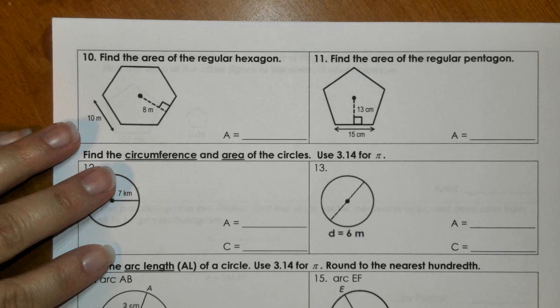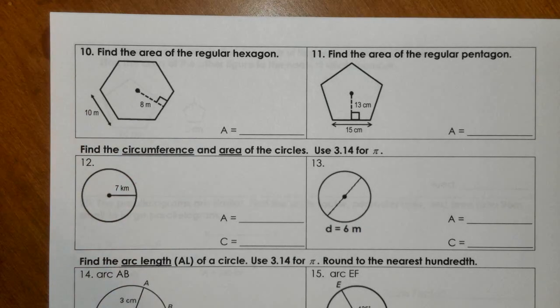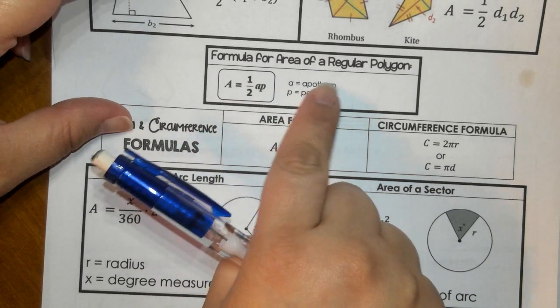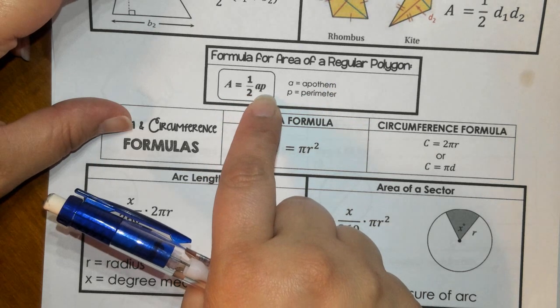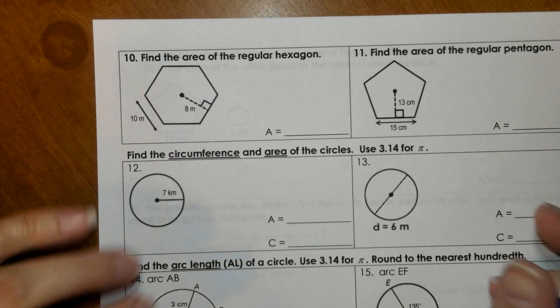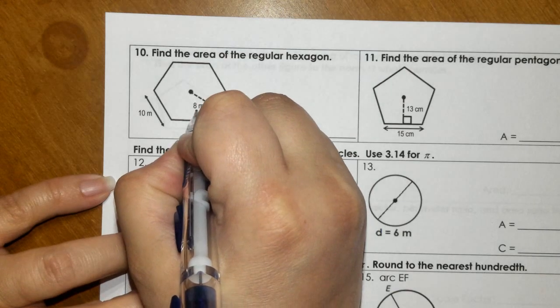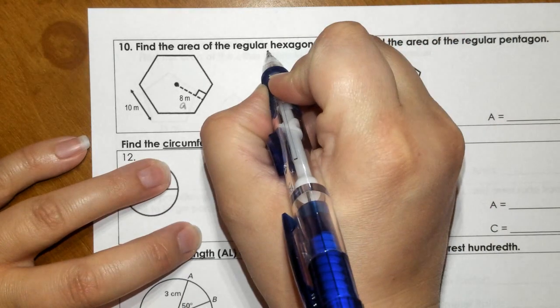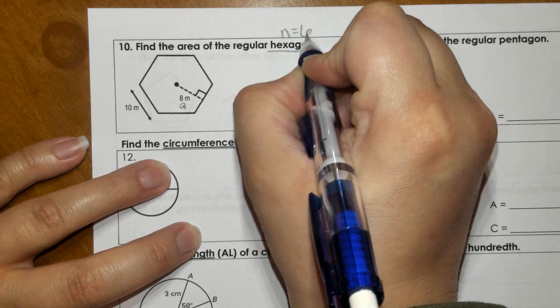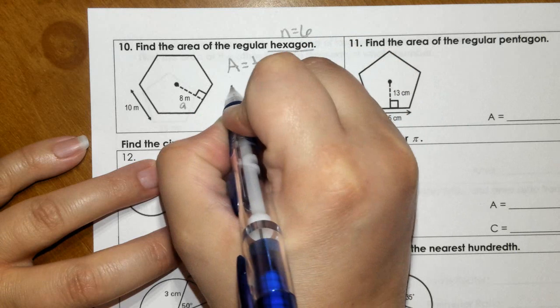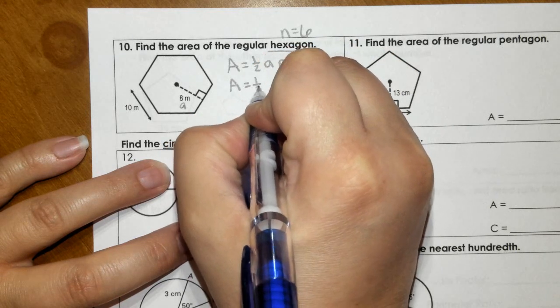Moving right along. So for number 10 and 11, we're dealing with regular polygons. We had this formula right here for a regular polygon is one half times the apothem times the perimeter of the shape given. In this case, number 10, this 8 is our apothem. The word hexagon gives us a nice clue. We know the number of sides is 6.